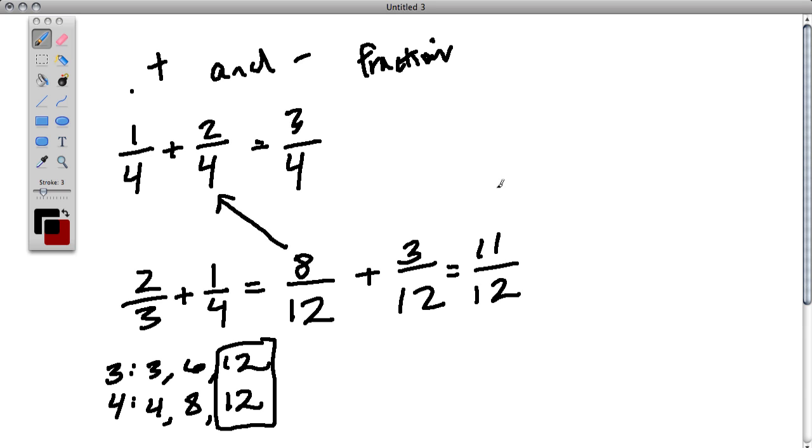So how would that look if we had negative numbers? So let's say we start with this example. And let's write it as 1 fourth plus negative 2 fourths.